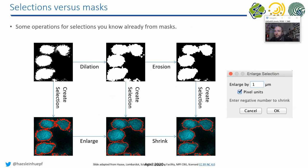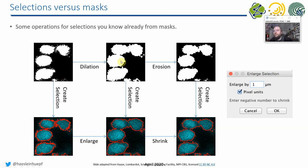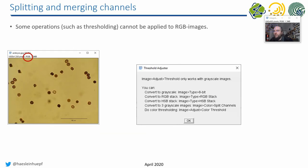Some operations can be done both ways. For example, dilation and erosion — found in the Process > Binary menu — work on binary images. But you can also create a selection from a binary image and enlarge that selection. Comparing the dilated binary image with an enlarged selection outline, they should be the same result. You can do these morphological operations on outlines or binary images; they just have slightly different names. Try both and find your own way.